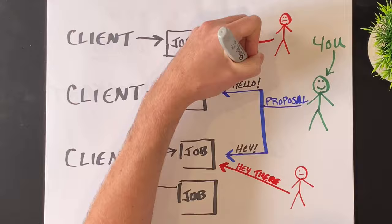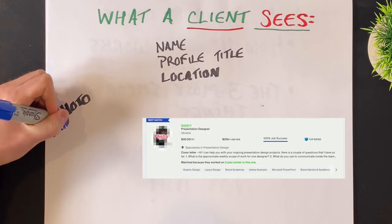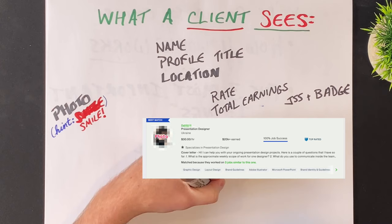When a client gets to your proposal, here's what they see: your photo, your profile headline and location, your badge and job success score percentage, your skill tags, your rate and total earnings, and the first two lines of your cover letter.